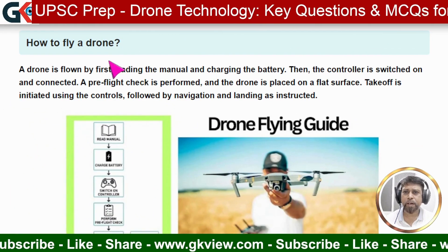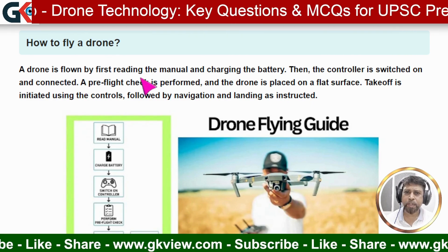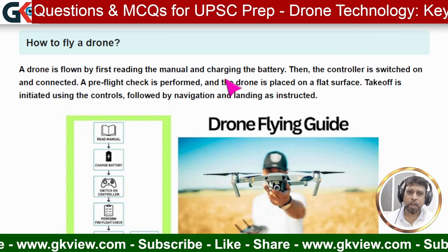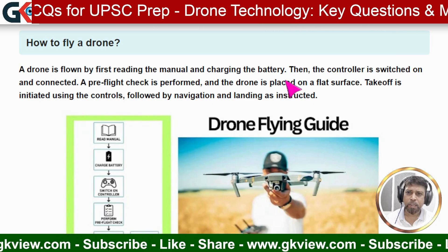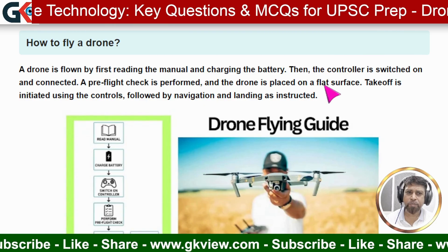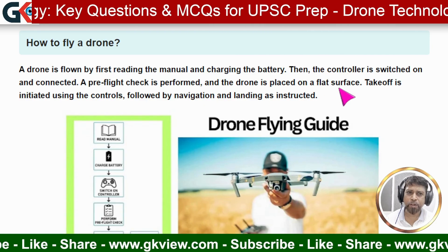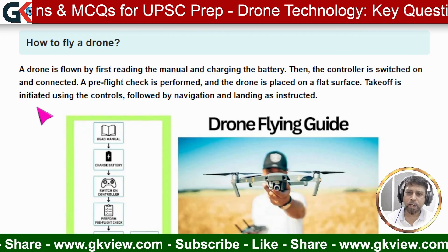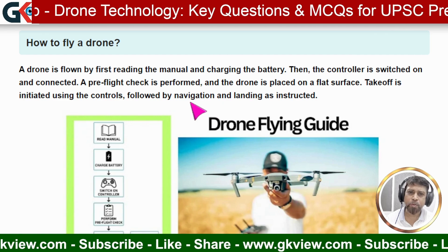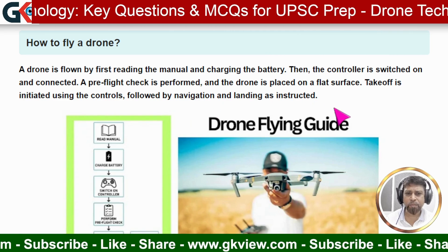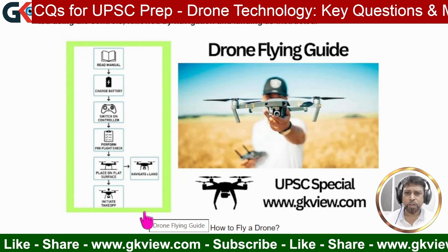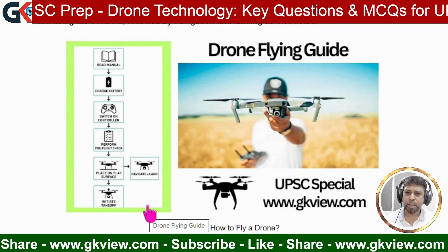The next question is: how do you fly a drone? A drone is flown by first reading the manual (a booklet that comes with the drone), then charging the battery. The controller is switched on and connected, a pre-flight check is performed, and the drone is placed on a flat surface. Takeoff is initiated by pressing a button, followed by navigation using GPS, and finally safe landing as instructed. A downloadable flowchart is linked in the description box.